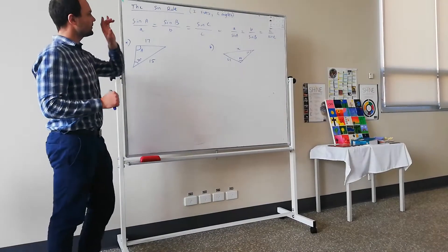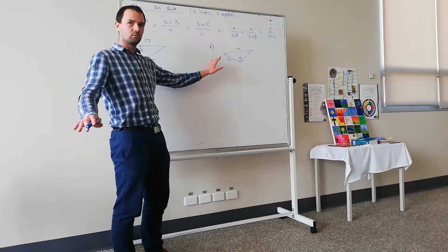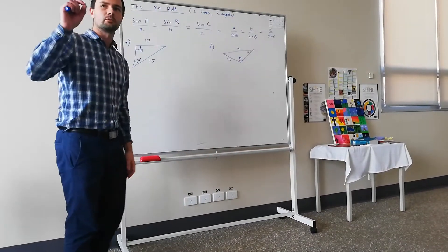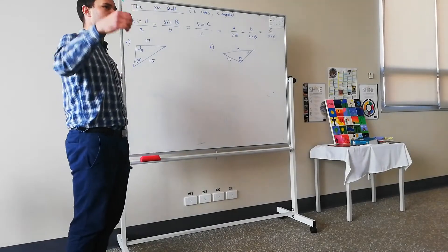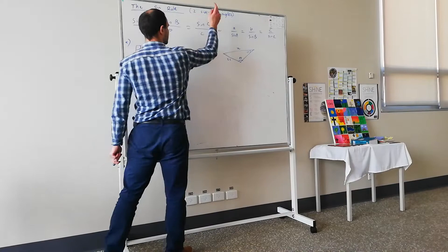Just want to point out here, sine rule is non-right angled triangles involving two sides and two angles. When we were doing cosine rule, they had three sides and one angle. Problems involving three sides and one angle. Here, two sides and two angles.